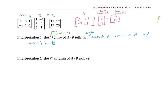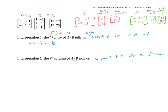Similarly, to get the second column of C, we can multiply the whole matrix A by the second column of B. So in general, when we multiply two matrices A times B, the J-th column of A times B is the product of A with the J-th column of B. One way to write this: if you have A times a matrix B consisting of column vectors x1, x2, x3, x4, then this is the same thing as multiplying A times each column vector and sticking them together into a matrix.